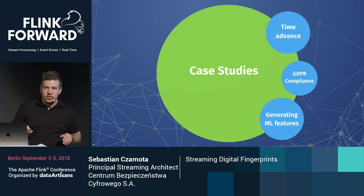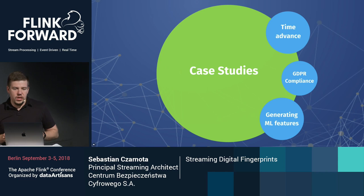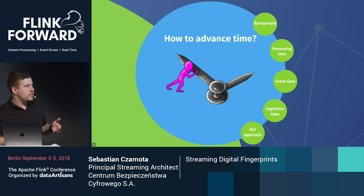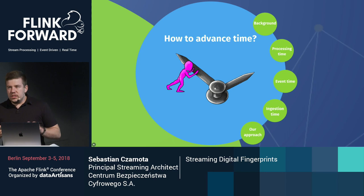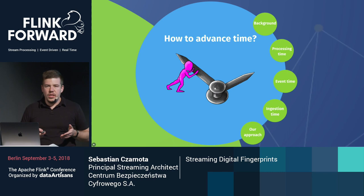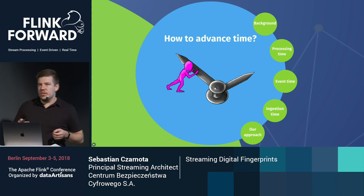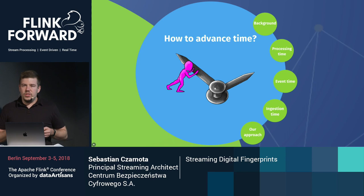Let's look at the system views most impacted by those goals. The most important thing you have to decide at the beginning of developing a Flink application is how to advance time. As you probably know, Flink can work in three time characteristics: processing time, ingestion time, and event time. Selecting one of them tells how Flink internally advances time, and this impacts performance. We found that it very strongly impacts the stability of the whole application.